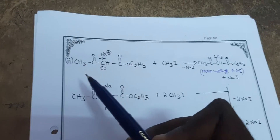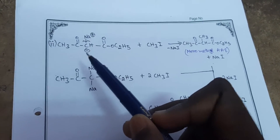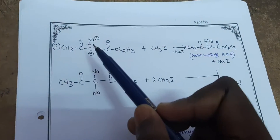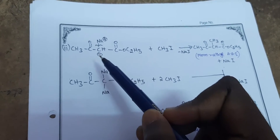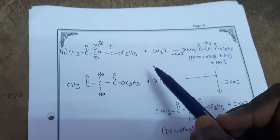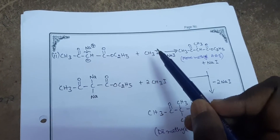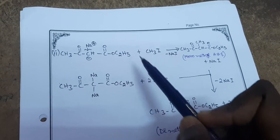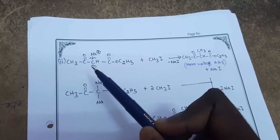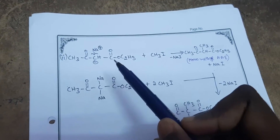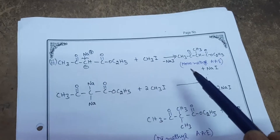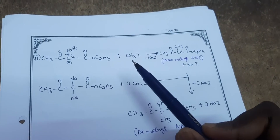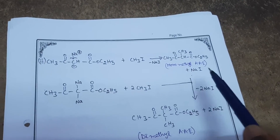Next, the sodium salt of acetoacetic ester — where a sodium is attached at the active methylene site — reacts with methyl iodide (CH₃I). Sodium is released as Na⁺ and the active methylene carbon develops a negative charge. CH₃I dissociates into CH₃⁺ and I⁻; Na⁺ and I⁻ combine and are released as sodium iodide (NaI). The CH₃⁺ attacks the negatively charged active methylene carbon, forming a bond. This product is the monomethyl form of acetoacetic ester. A mole of sodium iodide is also released.